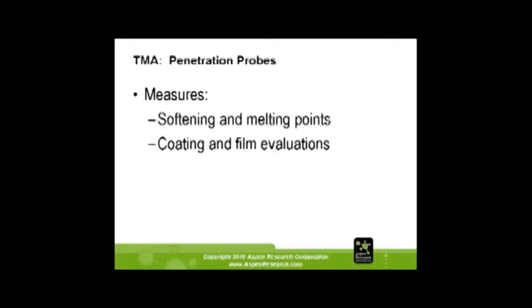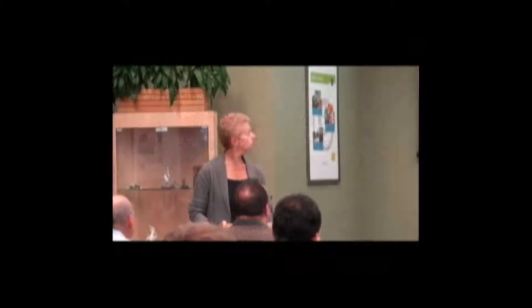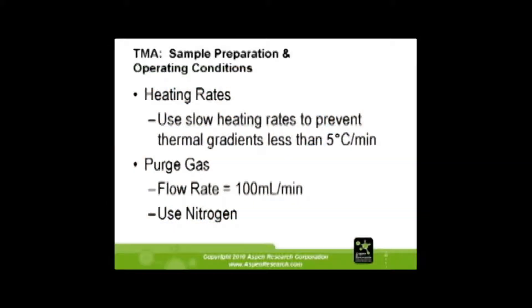The penetration probe measures softening points and coating and film formation conditions. Heating rates should be kept fairly slow to prevent thermal gradients — less than 5 degrees per minute. Purge gas is usually nitrogen, about 99% nitrogen, at a flow rate of 100 milliliters per minute, which works quite well.